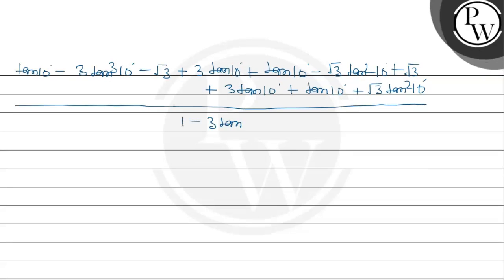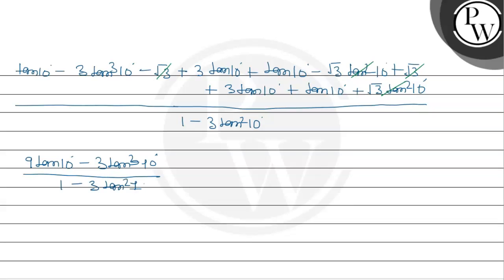Now values cancel out: -√3 and +√3 cancel, and -√3·tan²(10°) and +√3·tan²(10°) cancel. What remains is 3·tan(10°) - 3tan³(10°) upon 1 - 3tan²(10°). Taking out factor 3, this becomes 3·[tan(10°) - tan³(10°)] / [1 - 3tan²(10°)].